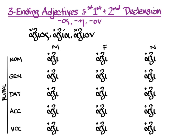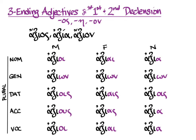Now let's do the plural. Here are the stems, and here are the endings. Axioi, axiai, axia in the nominative. Axion, axion, axion in the genitive. Axiois, axiois in the dative. Axios, axia in the accusative. And axioi, axiai, axia in the vocative. Adjectives, as you can see, don't have the exception in the feminine genitive plural that first declension nouns have — the accent stays happily on the stem and doesn't move into the ending.